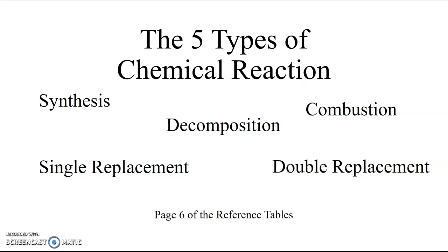Those are the five types of chemical reaction as listed on page six of your reference tables. Remember that you will have the reference tables available to you at all times when working on these tasks, so you don't need to memorize the five types. You just need to know how to use the generic forms listed in your reference tables to identify what type of reaction is taking place in a given example. Thank you very much and have a great day.